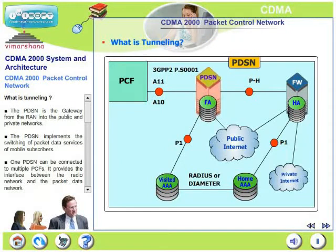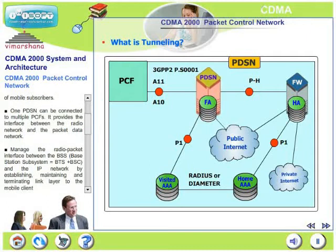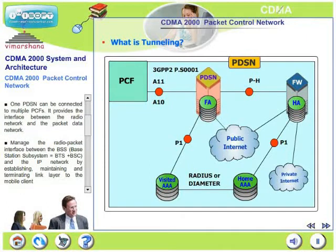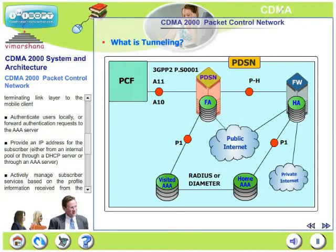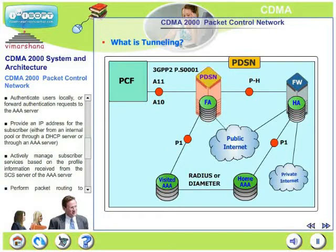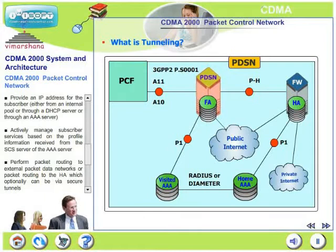The PDSN is a gateway from the RAN into public or private data networks. PDSN implements the switching of packet data services of the mobiles. One PDSN can in fact be connected to multiple PCFs. It provides an interface between the radio network and the packet data networks. PDSN manages the radio packet interface between the BSS and the IP network by establishing, maintaining, and terminating link layer connections to the mobiles. PDSN authenticates users locally or forwards authentication requests to an AAA server, and provides an IP address either from an internal pool, through a DHCP server, or through an AAA server.